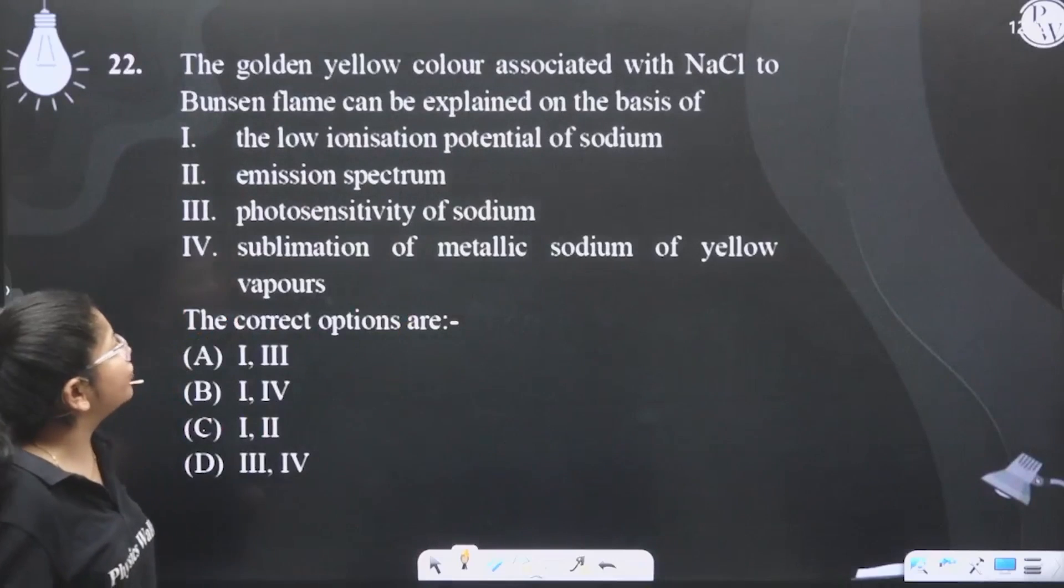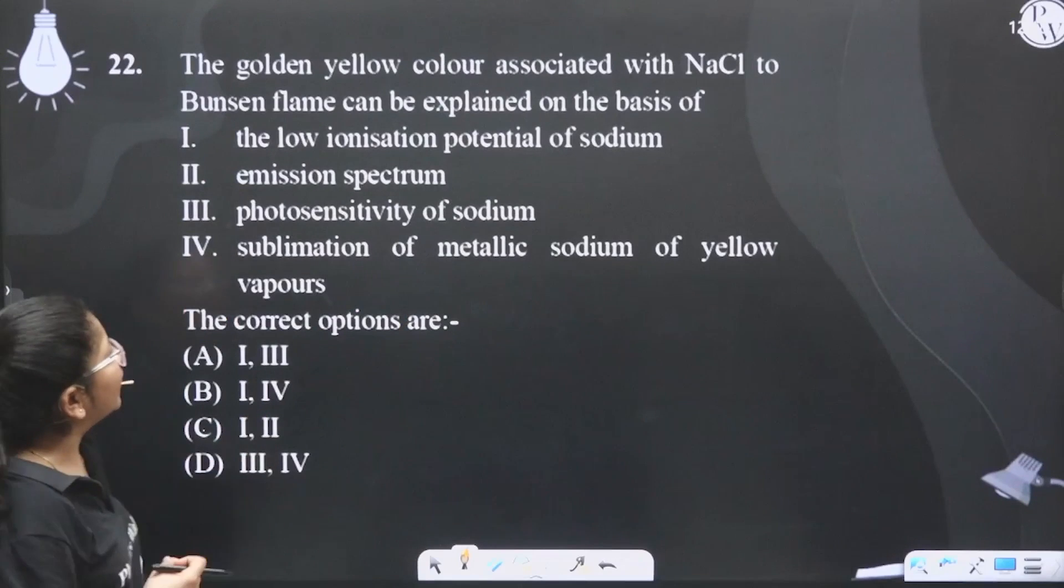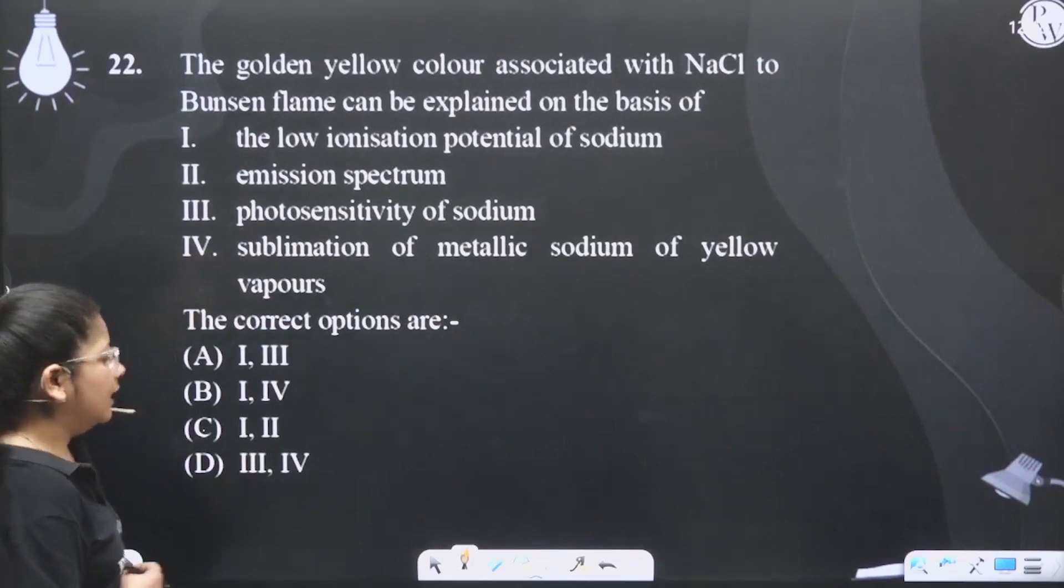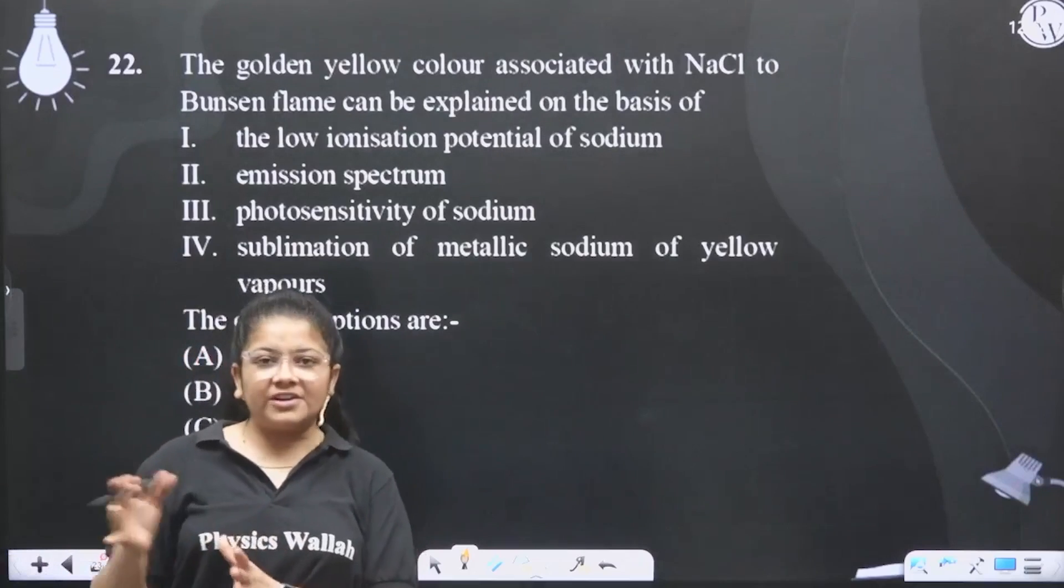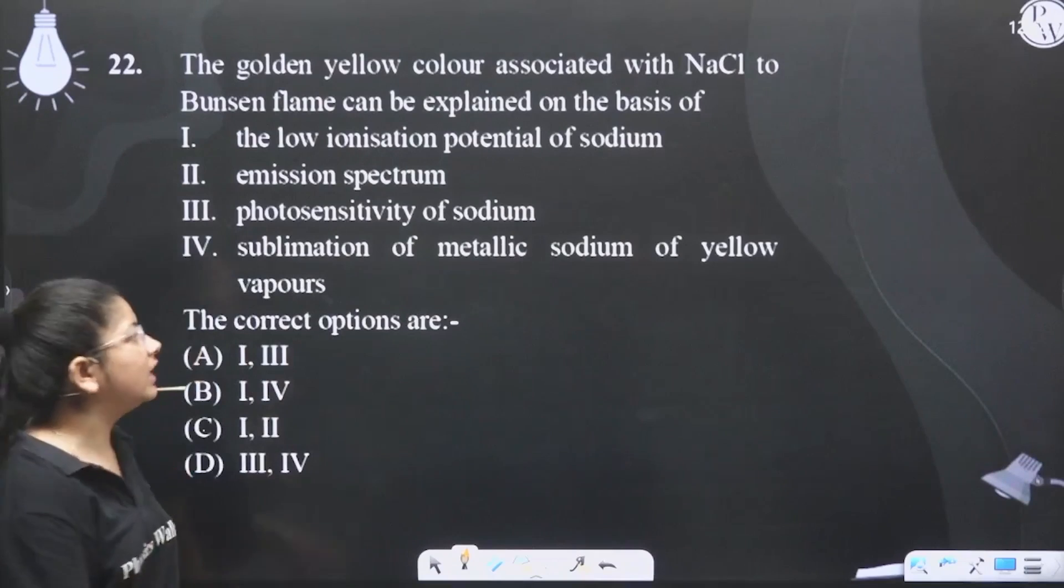The golden yellow color associated with NaCl to Bunsen flame can be explained on the basis of... Basically, Bunsen burner is a special type of burner which we use in the flame test. So the color of NaCl is explained...